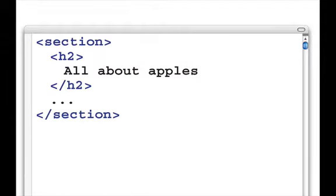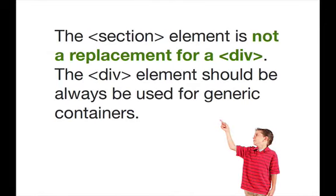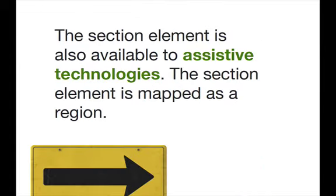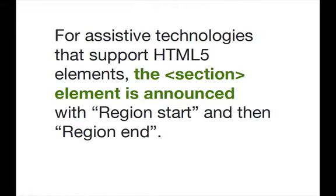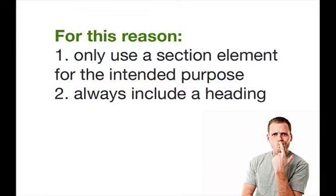Here we have a code example. We have the section element, and inside it we have an H2. The content of the H2 says 'all about apples', which presumes that this section is all about apples. The section element is not a replacement for the div element — the div element should always be used for generic containers. The section element is also available to assistive technologies; it is mapped as a region. For assistive technologies that support HTML5 elements, the section element is announced as 'region start' when entered and 'region end' when left.